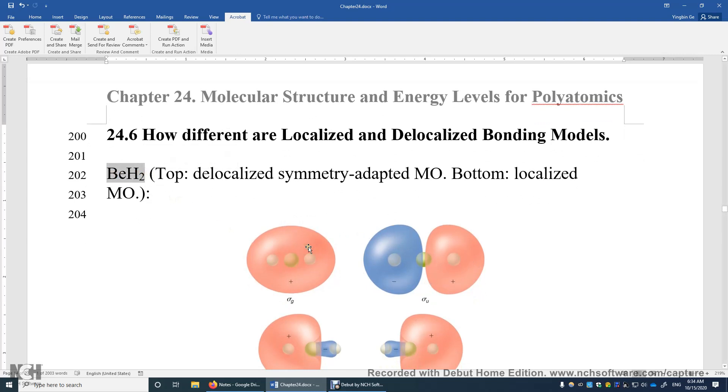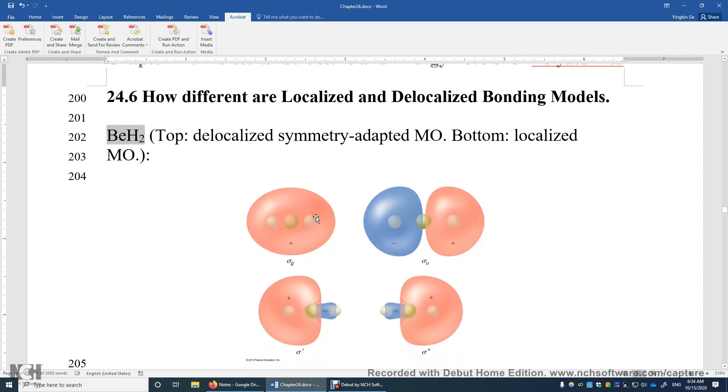On top, you see the delocalized symmetry-adapted molecular orbitals. This is bonding orbital. The symmetry is sigma g. This is anti-bonding orbital with a symmetry of sigma u.